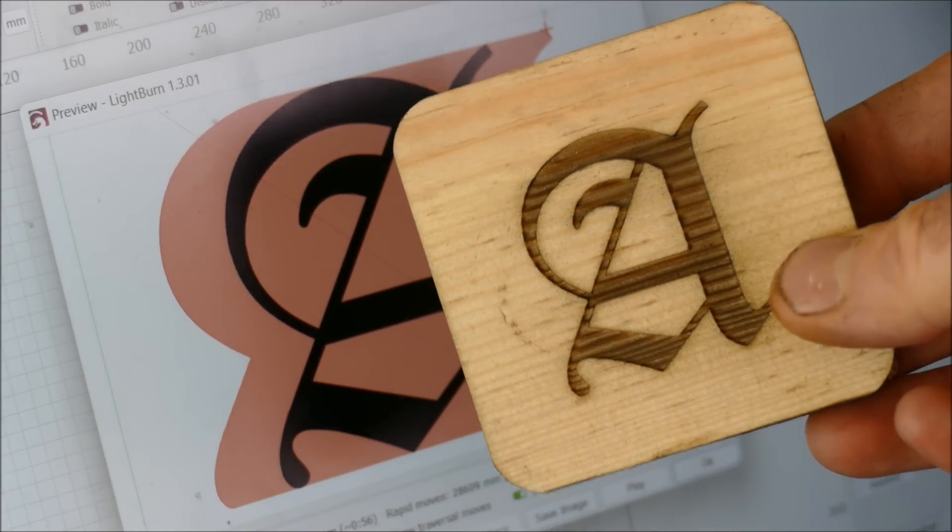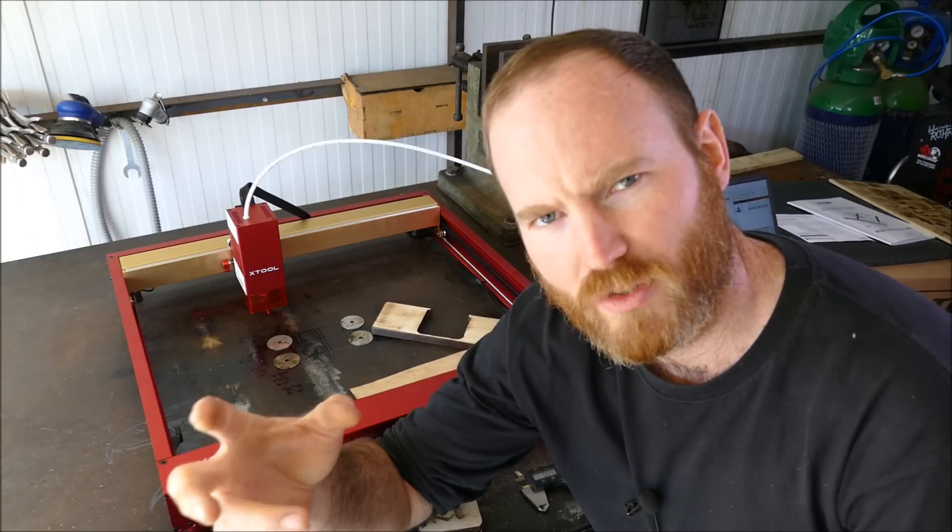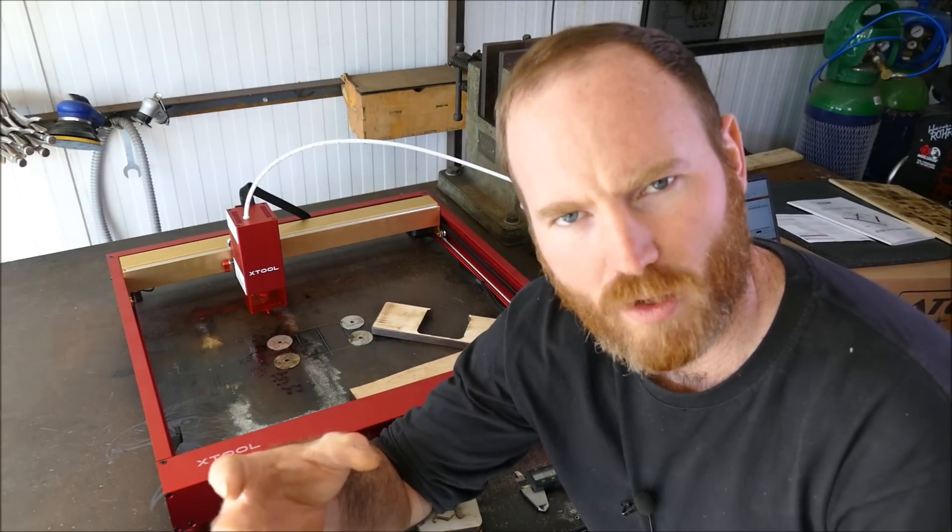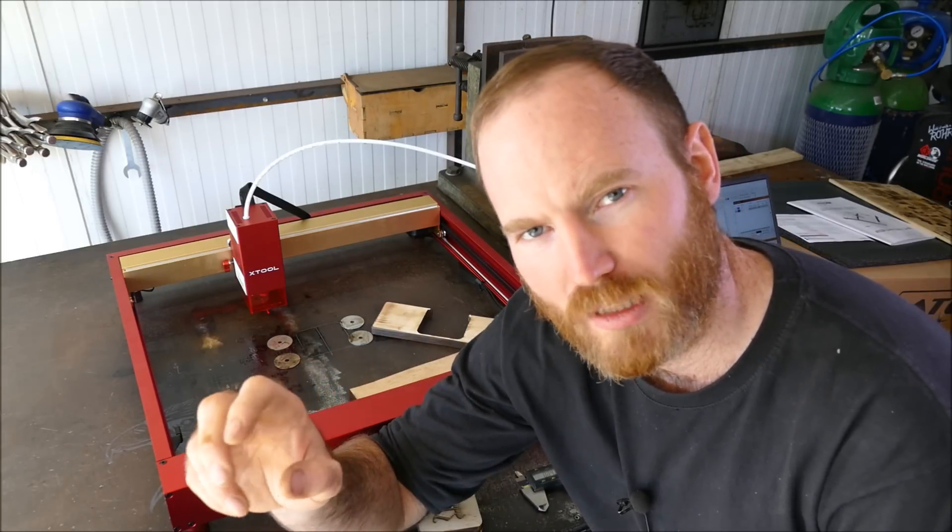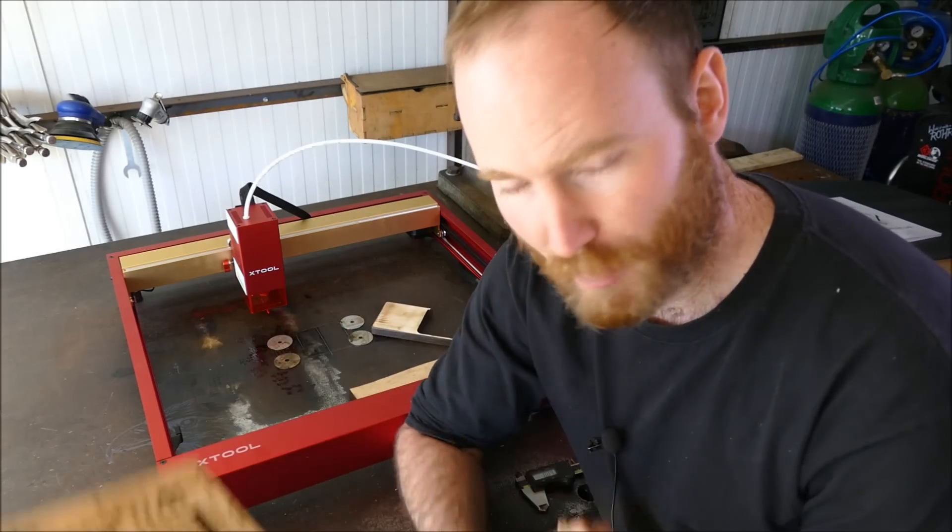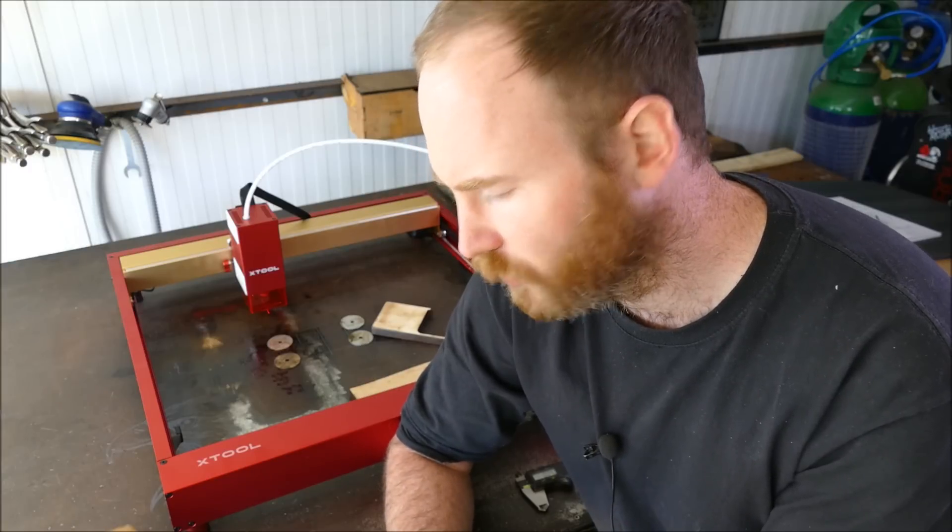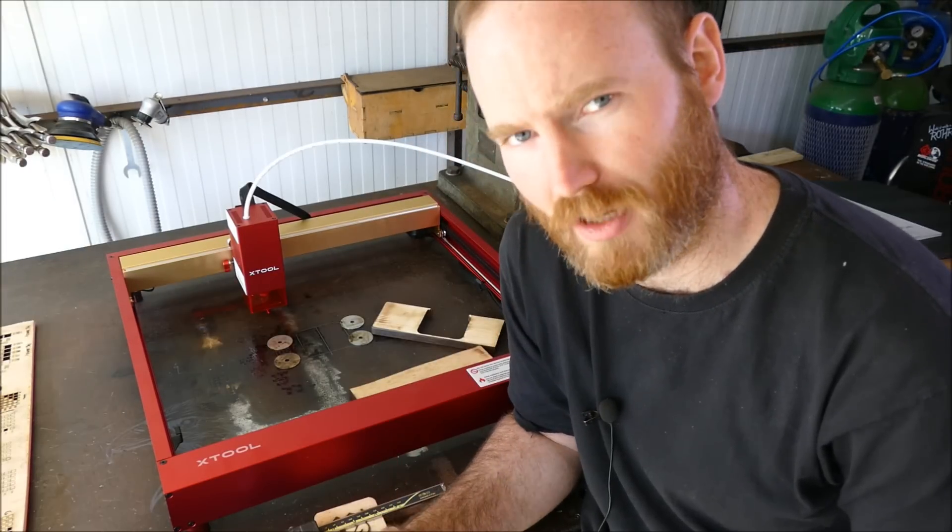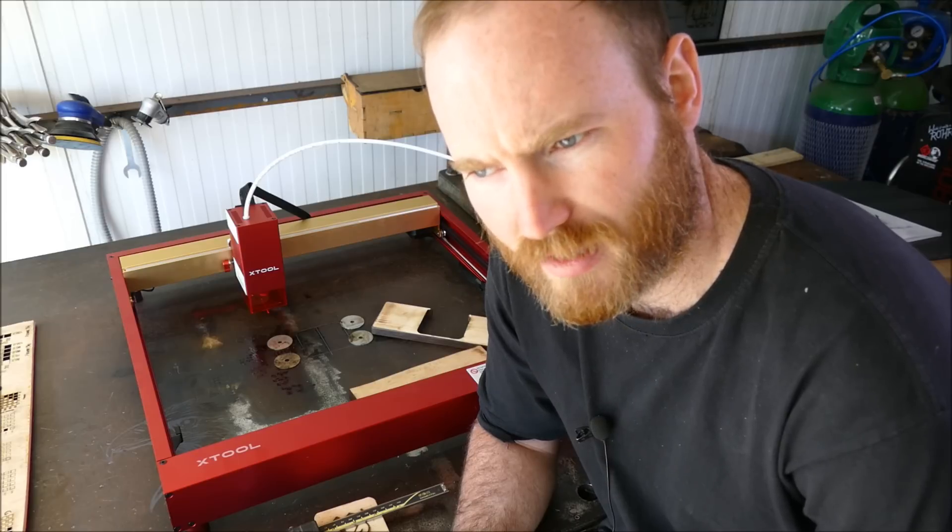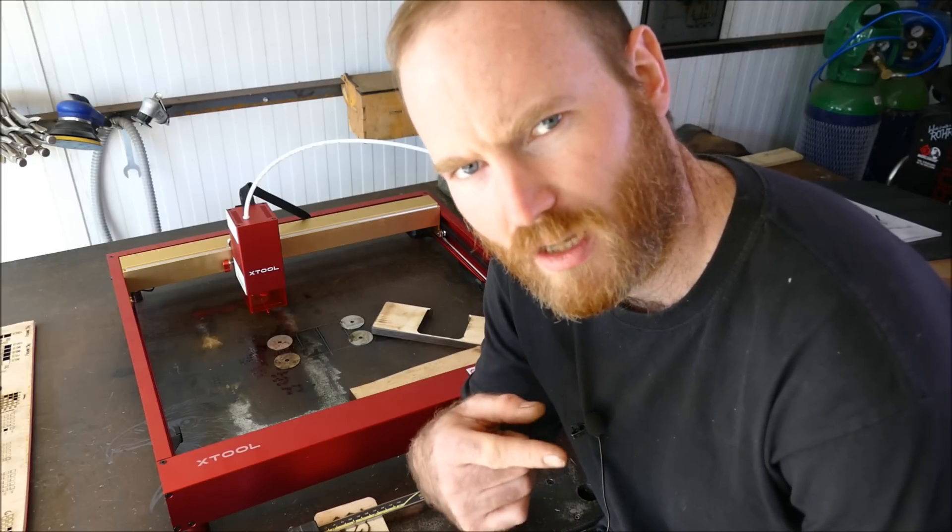So the cheapest laser that we've reviewed so far is the Comgrow Z1. That's roughly 300 quid at the moment. Now that wouldn't cut anything like this, but on this board it cut it at 100 millimeters per minute. That makes the xTool five times faster. The xTool is five and a half times more expensive, but if I think about it that's actually way more cost effective than the CO2 laser that I have.